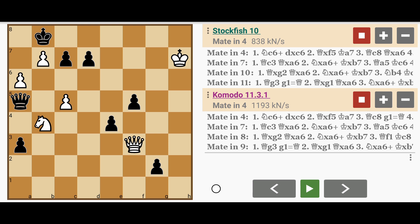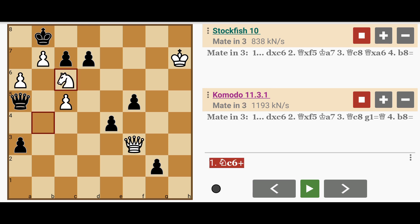The solution is knight to c6 check, forking the king and queen, basically sacrificing the knight.